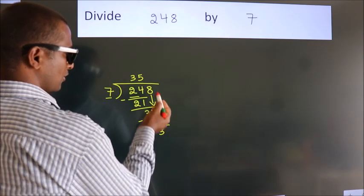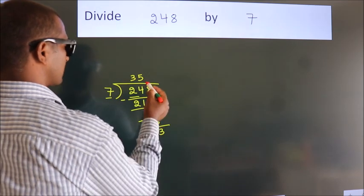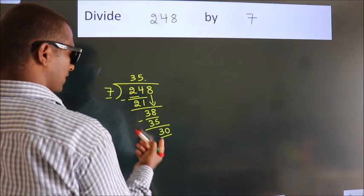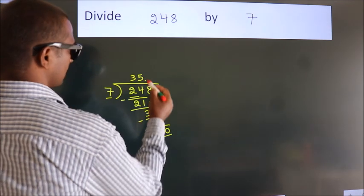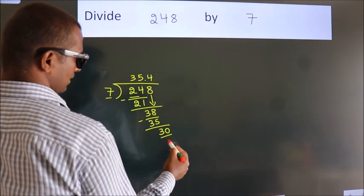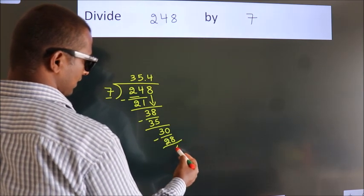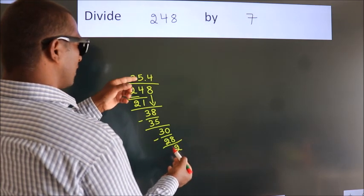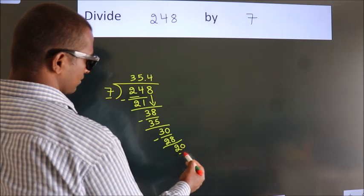After this, no more numbers to bring down. So we subtract and get 2. After this, we already have the decimal, so directly take 0, making 20.